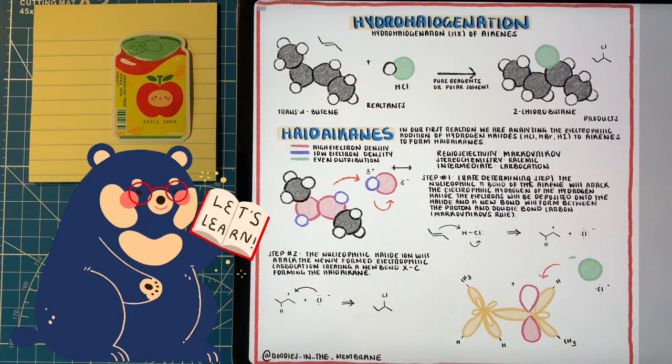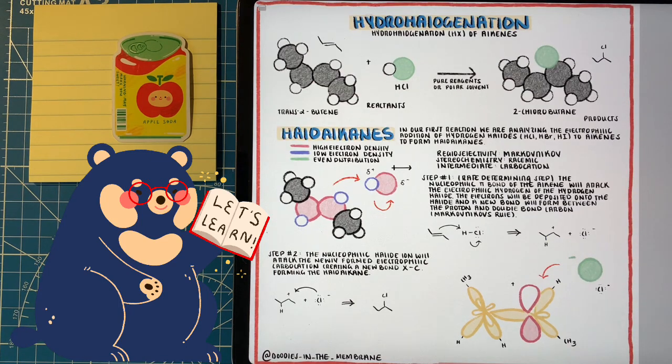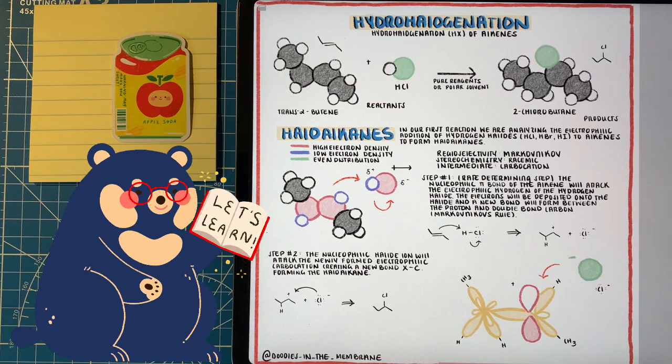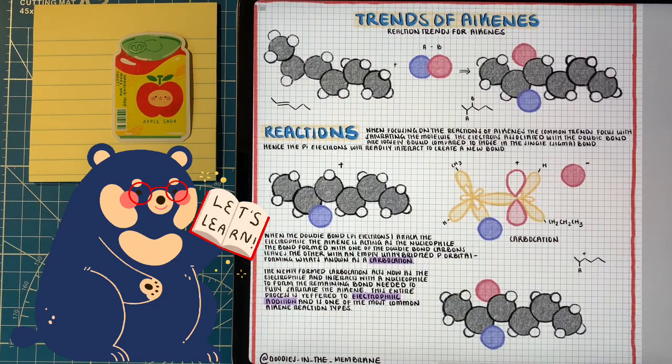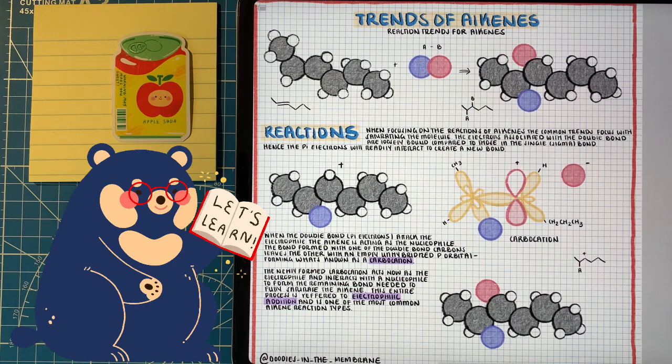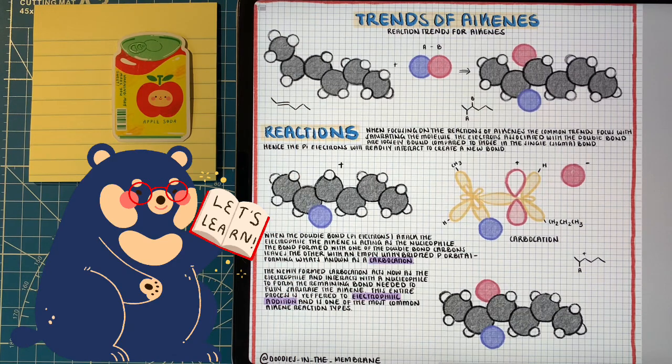In the last video we talked about our first example with hydrohalogenation so we can really nail down the fact of nucleophiles, electrophiles and how these organic chemistry reactions work. Throughout this video we're going to talk about three new reactions with alkenes that are under the topic of electrophilic addition.